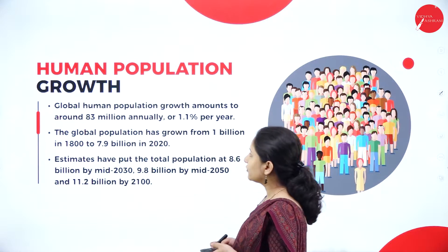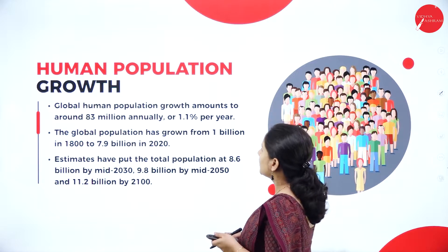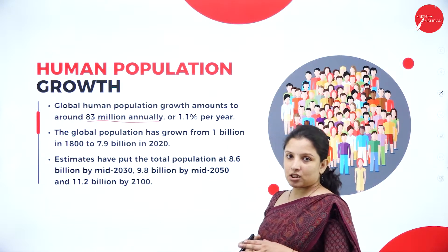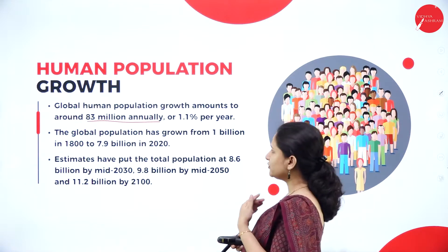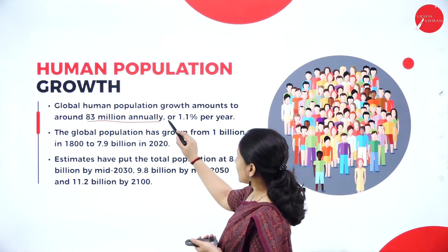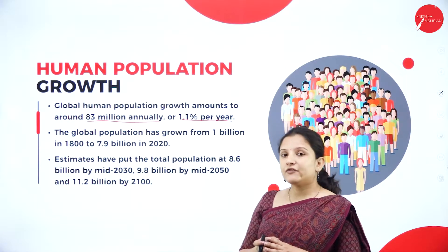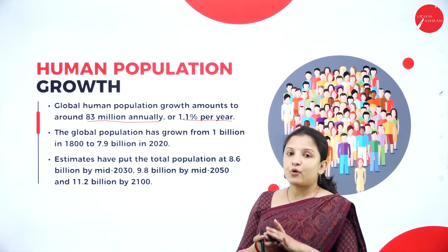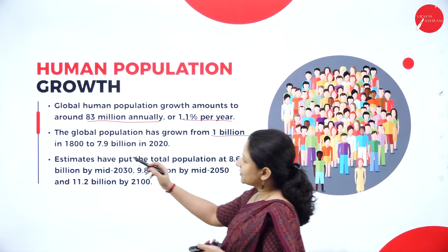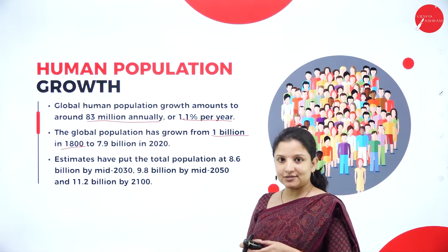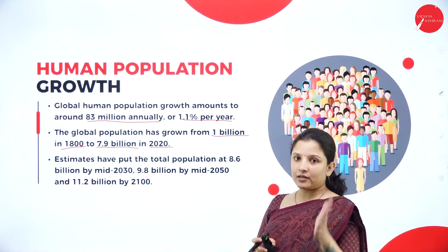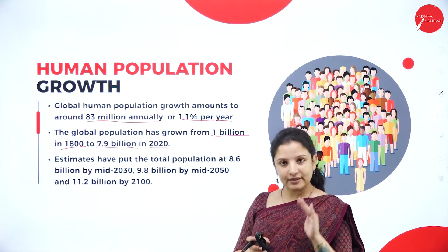Talking about human population growth globally, the world population increases by about 83 million every year, which is an increase of 1.1 percent annually. The global population has grown from 1 billion in 1800 to 7.9 billion in 2020.